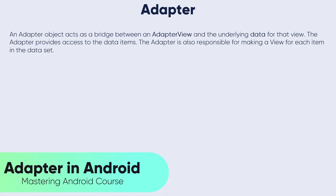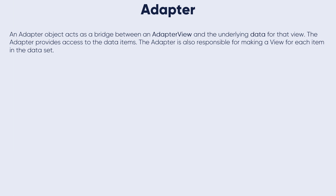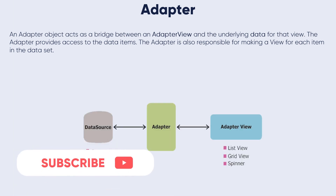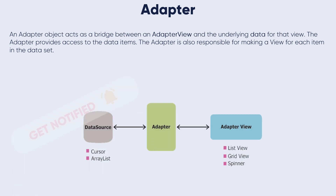An adapter object acts as a bridge between the adapter view and the underlying data for that view. The adapter provides access to the data items and is also responsible for making a view for each item in the data set. Consider this diagram — we have a data source, either a cursor, an array list, a database, or any other format of data source.